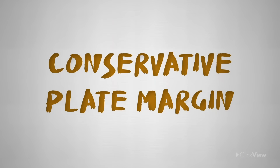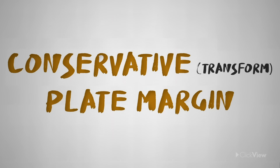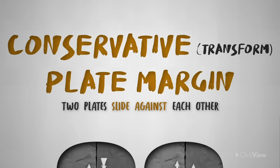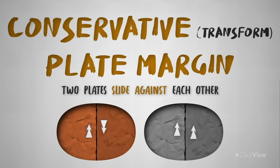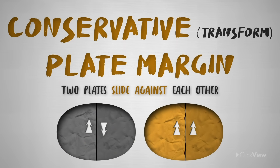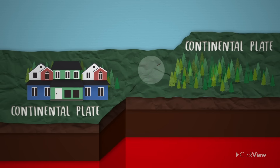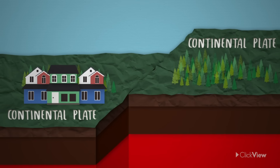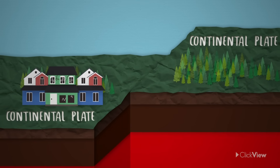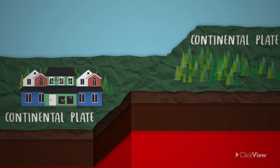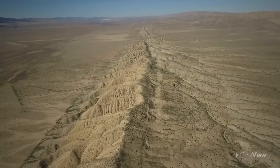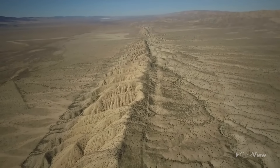At a conservative or transform plate margin, two plates slide against each other, either in different directions or in the same direction at different speeds. These parts of the world also experience earthquakes due to the movement of these plates. An example of this is the San Andreas Fault in California.